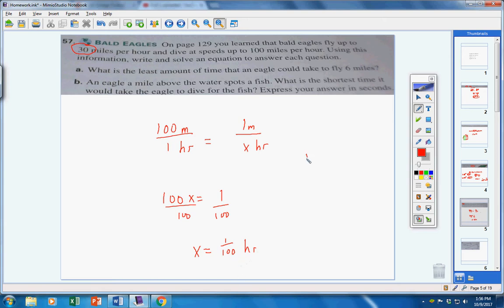If you want to convert that over to minutes, we'll write 1 one-hundredth times 60 over 1. And it's going to be less than a second. So, an eagle can dive one mile in less than one second. 20 goes into both of these. So, we would get three-fifths of a second. That's really, really fast. If the fish saw the eagle, he would have less than three-fifths of a second to respond. Pretty cool.